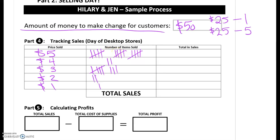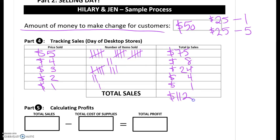Time to add up everything on her list. She sold 15 at the $5 mark, so that's $75. She sold two for $4, so that was $8. She sold eight at $3, so that was $24 in sales. She sold two for $2 — two times two is $4. And she sold one for $1. Adding all of that up gives her total sales of $112.